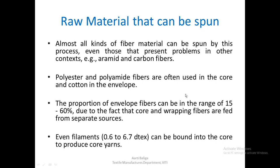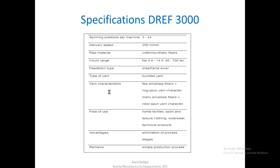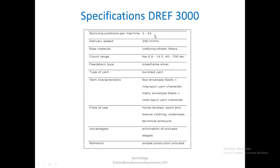DREF 3 is an extension of DREF 2 spinning, where there was no core. Specifications: spinning positions are 3 to 24, delivery speed is 250 meters per minute, raw materials are cotton and synthetic fibres, and the count range is in the coarse count region. Feedstock is draw frame sliver and the type of yarn produced is a bundled yarn. Yarn characteristics depend on the proportion of envelope fibres: fewer envelope fibres give a ring-spun yarn character, while more envelope fibres give a character similar to rotor-spun yarn.